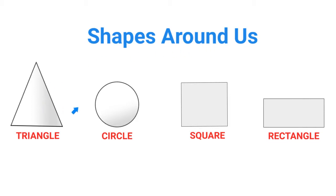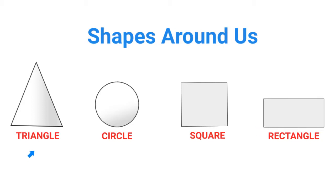You see many different shapes around you. This is a triangle. This is a circle. This is a square. And this is a rectangle. Let's look at them once again: triangle, circle, square, and rectangle.